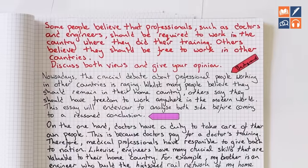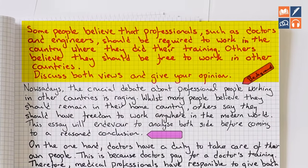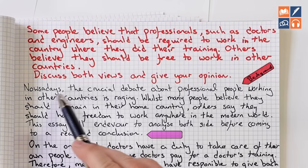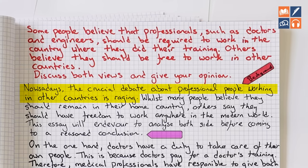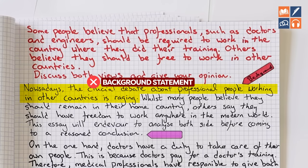Let's start off by understanding the question — very, very important. Some people believe that professionals, such as doctors and engineers, should be required to work in the country where they did their training. Others believe they should be free to work in other countries. Discuss both views and give your opinion. So the student starts off with 'nowsadays', spelled incorrectly. And in the very first sentence, the student has made a crucial error — they've included a background statement.